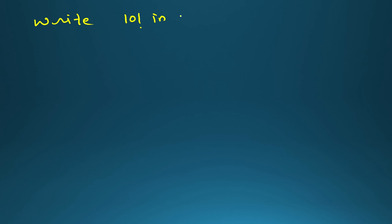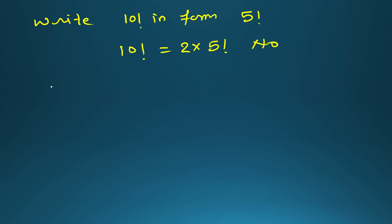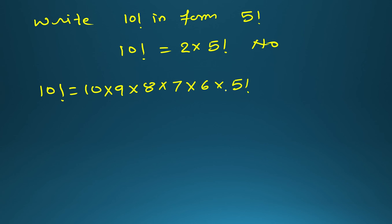Another type of question: write factorial 10 in terms of factorial 5. You cannot simply say 10! = 2 × 5! — that is wrong. Instead, write 10! = 10 × 9 × 8 × 7 × 6 × 5!, because after 6 you have 5×4×3×2×1 which is 5!. Then calculate 10×9×8×7×6 and express the answer in terms of 5!.